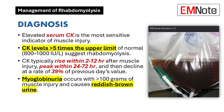Diagnosis. The most sensitive and reliable indicator of muscle injury in rhabdomyolysis is an elevated serum CK level. A five-fold or greater increase above the upper limit of normal, approximately 800 to 1,000 international units per liter, is generally required for diagnosis. CK levels typically rise within 2 to 12 hours after muscle injury, peak within 24 to 72 hours, and then decline at a rate of about 39% of the previous day's value. Failure of CK levels to decrease in this manner suggests ongoing muscle necrosis.